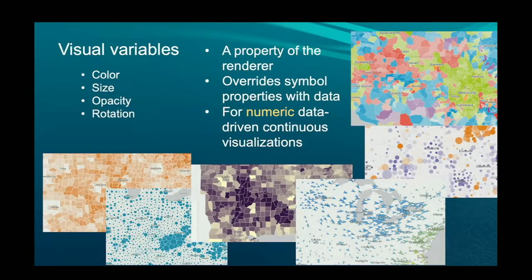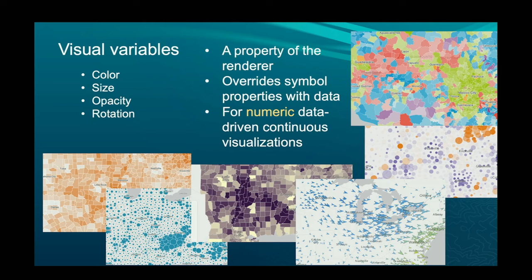Visual variables are pretty important because they provide an unclassified way to view your data. Rather than having, say, four class breaks, you can show a lot more variation in the data using an unclassified method. The same applies to proportional size — you change the size of the visual variable based on a data value — as well as opacity and rotation. This only works for numeric fields. If you're working with string data, that falls under the unique value renderer category.